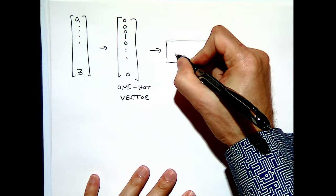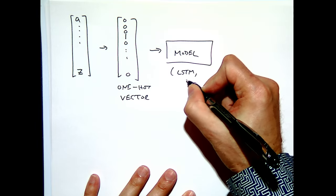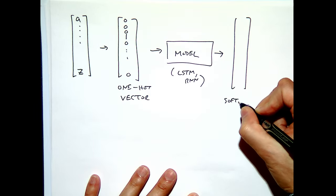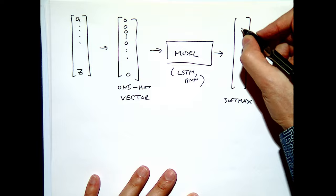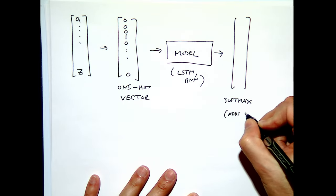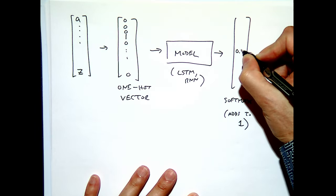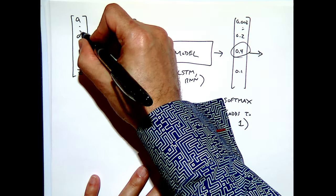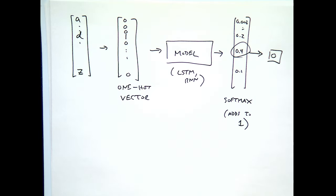When your phone does autocomplete, it maintains multiple hypotheses about what the answer might be — typically showing three to five possible words. This is called beam search. Instead of committing to the single most likely next letter, at every branch point we generate another set of hypotheses and track multiple candidate paths simultaneously.